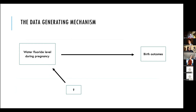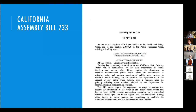A big piece of this question is what factors might be affecting the levels of fluoride people are exposed to during pregnancy and whether those factors might also influence the risk of adverse birth outcomes. To better understand our data generating mechanism and what confounders we need to account for, we need to understand what determines water fluoride levels in water systems across California. In 1995, California passed a law that all water systems serving more than 10,000 customers must fluoridate their water once they identify funds to do so, resulting in a lot of variability in when and where water has been fluoridated across the state.